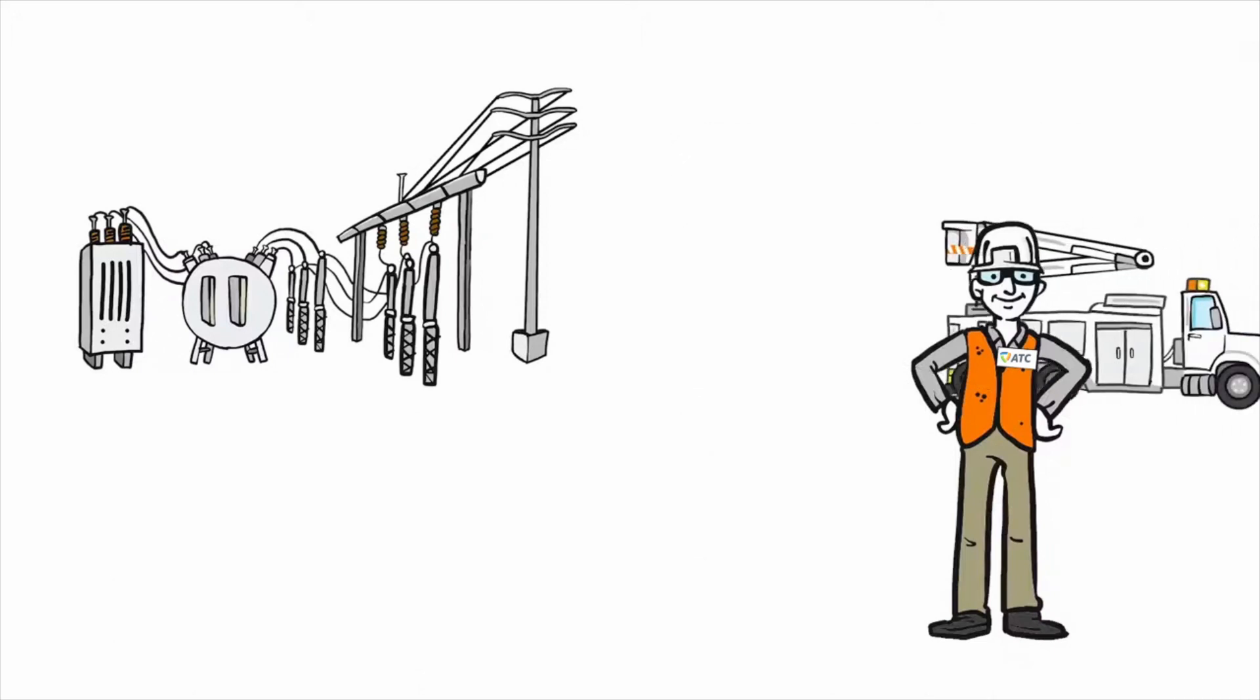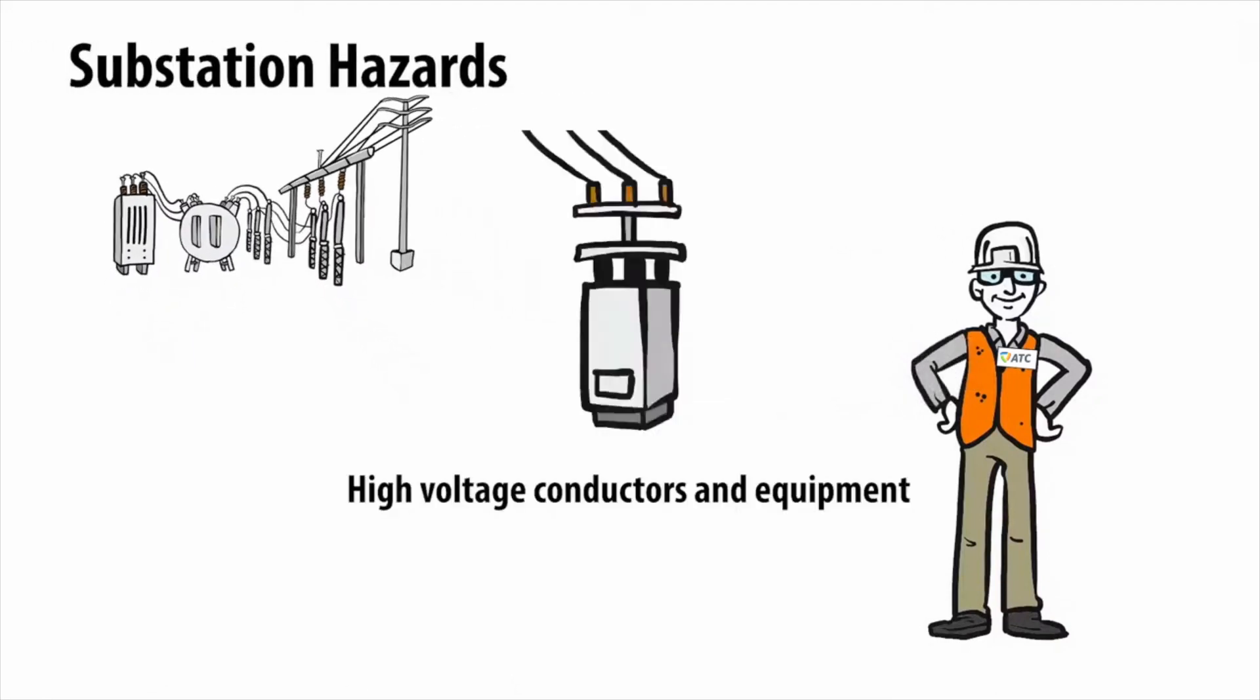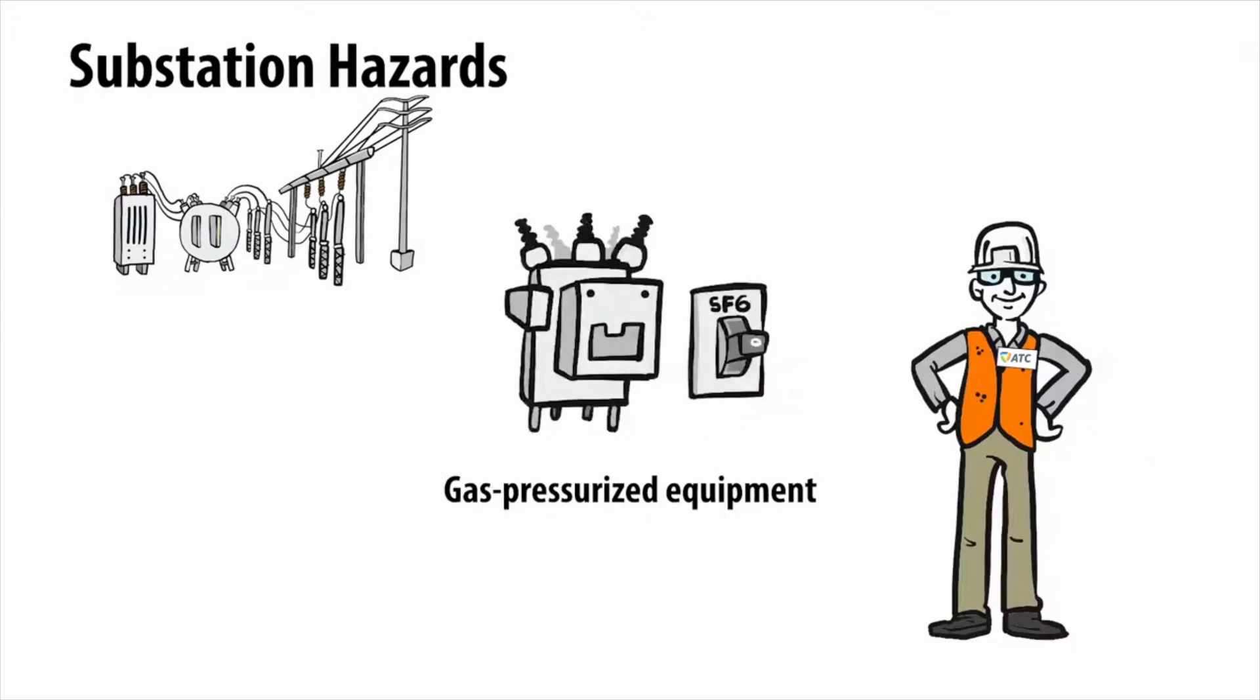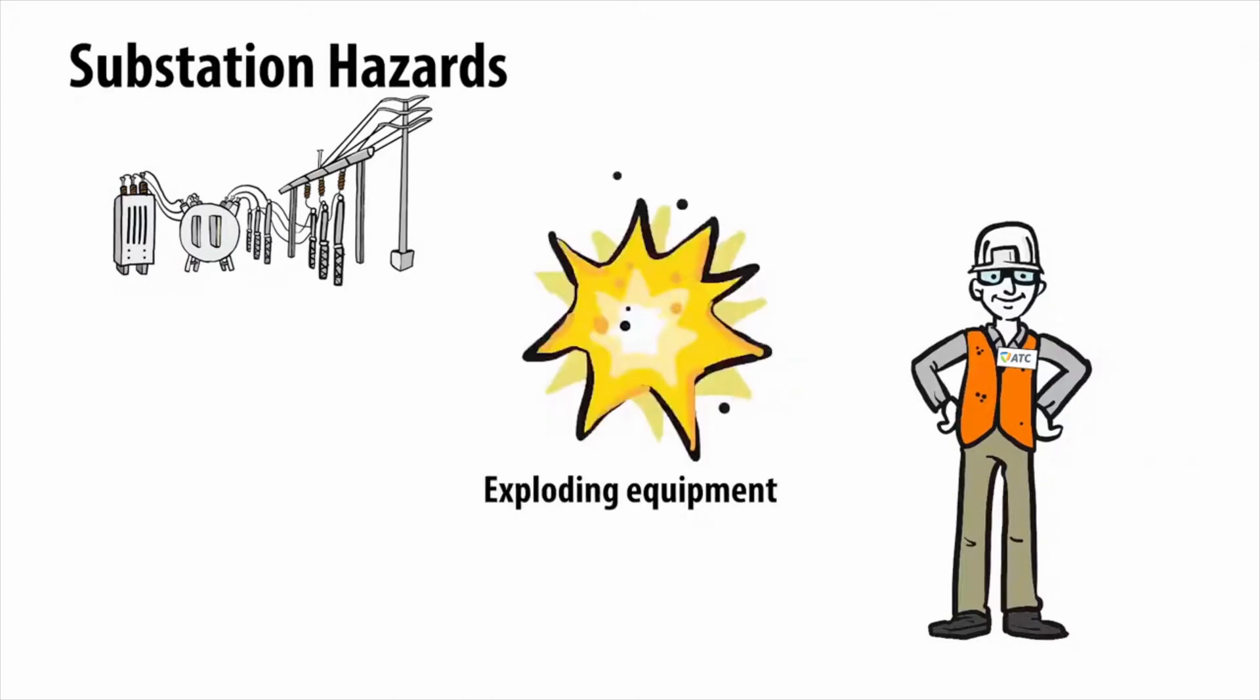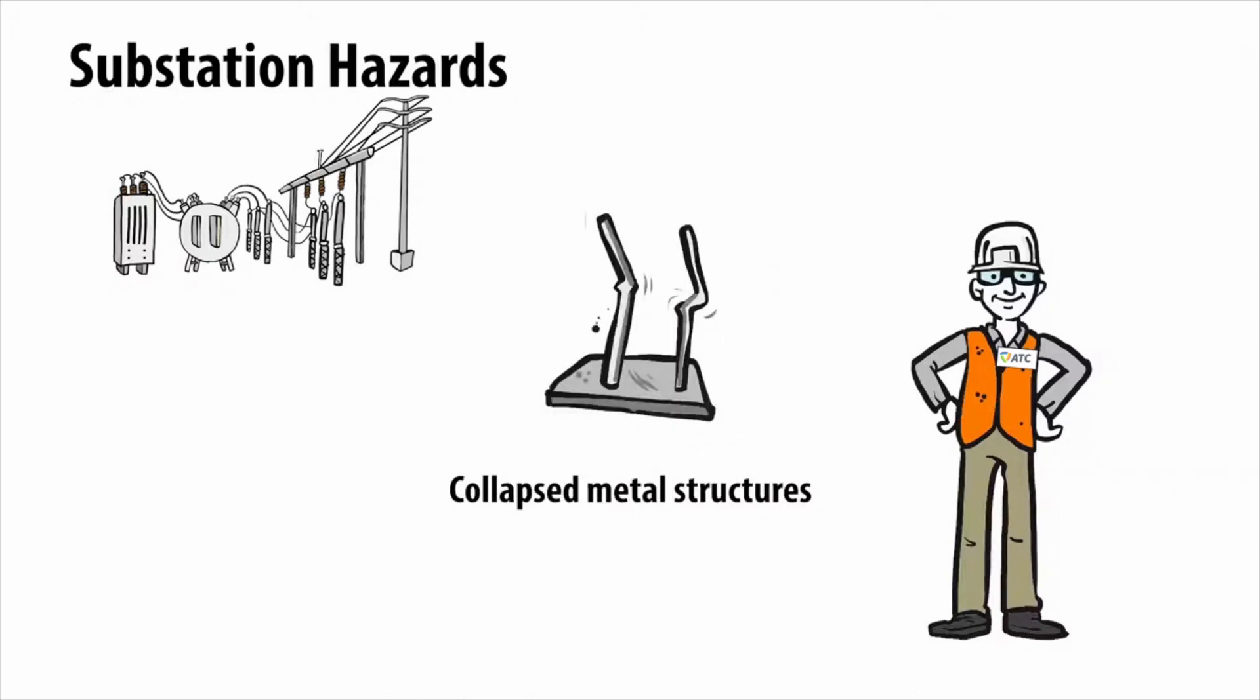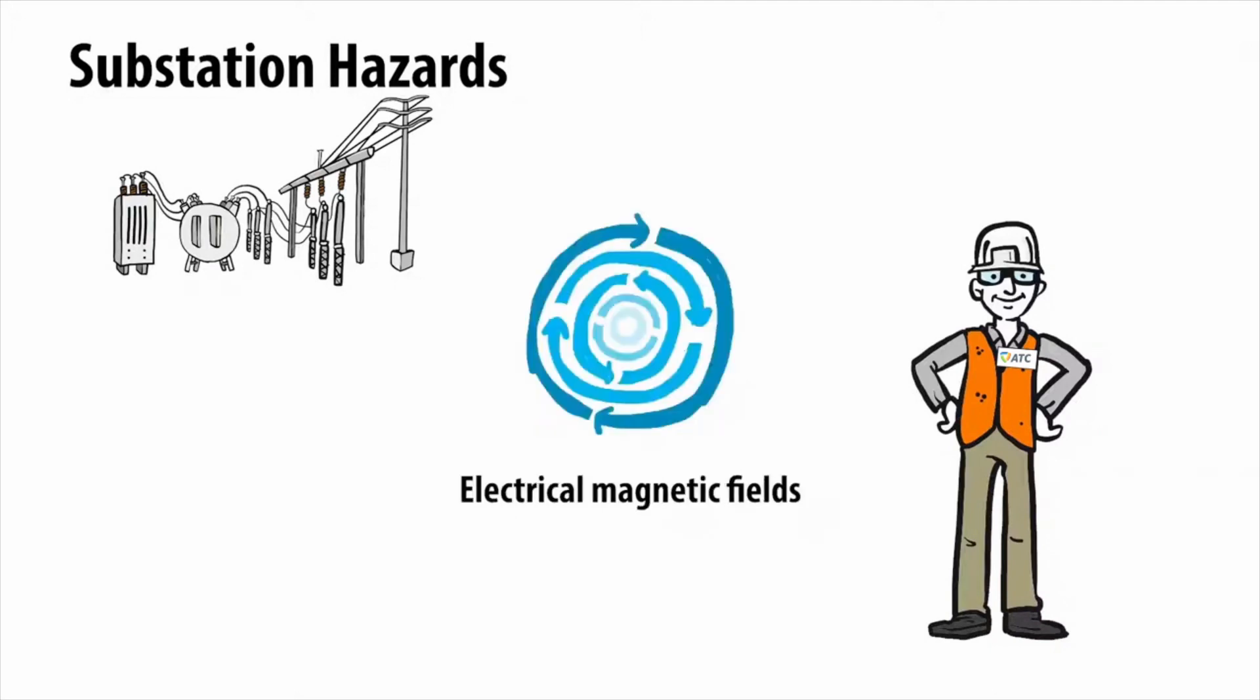Some hazards may be the result of mishap. Others are part of normal operations. Hazards include high-voltage electric conductors and equipment, oil-filled equipment that can ignite at 400 degrees Fahrenheit, gas-pressurized equipment, exploding equipment, toxic smoke, gases and chemicals, collapsed steel and aluminum framework, hot surfaces, and electrical magnetic fields.